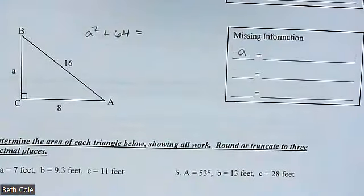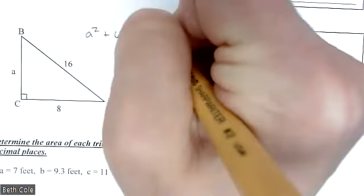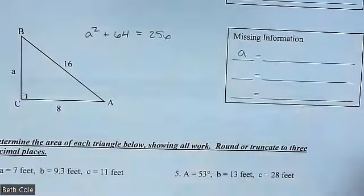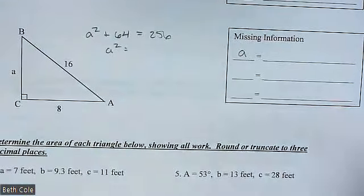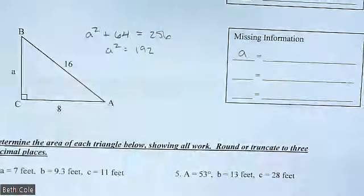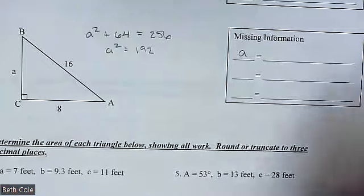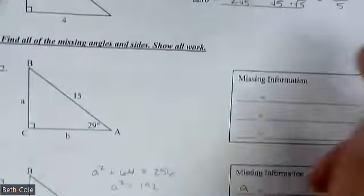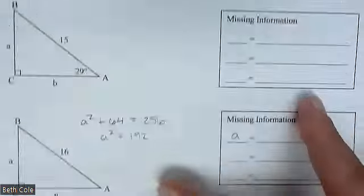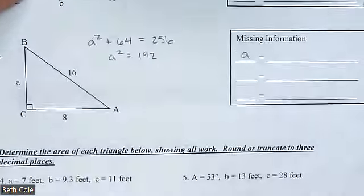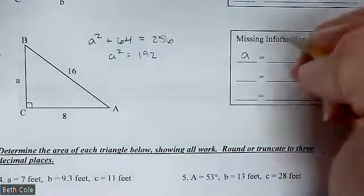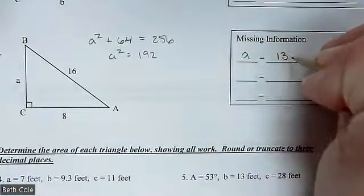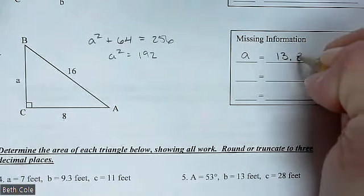Is that 256? Yes — 16 squared is 256. Then you subtract 64, and using my calculator I get 192. The only one that needs square roots written out is the first problem. For this one you can just type √192 and get the decimal — I got 13.856.